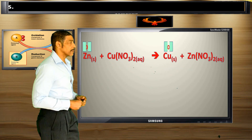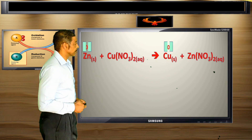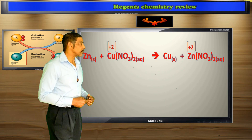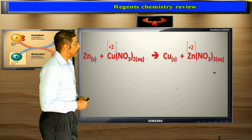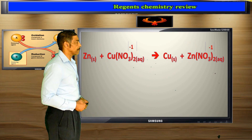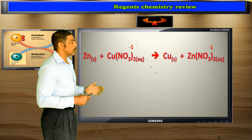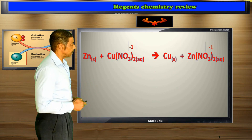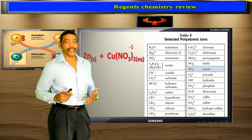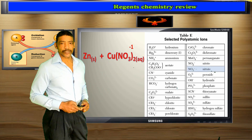The oxidation number for any element will always be zero. The oxidation number for any metallic ion will be positive. In this case, both oxidation numbers of the metallic ions are plus two. The oxidation number of any non-metallic ion will always be negative, including polyatomic ions. In this case, the nitrate polyatomic ion has a negative one oxidation state.